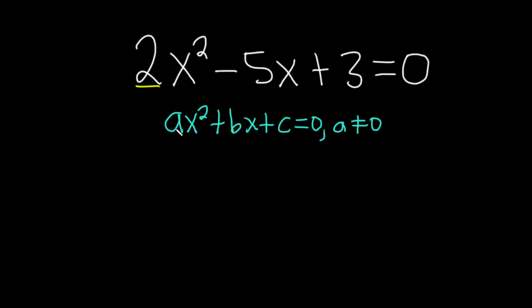So a here is going to be 2 just by matching. It's the coefficient of x squared, so a = 2. b is negative 5, again just via matching, so b = -5.